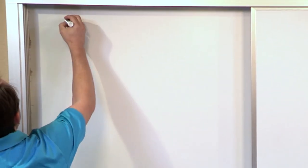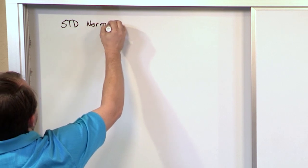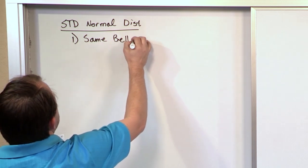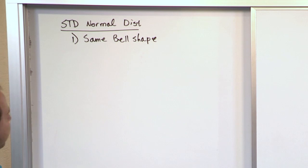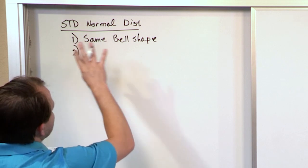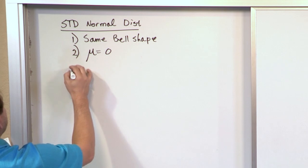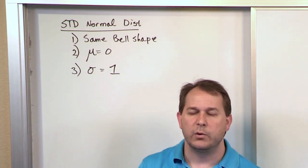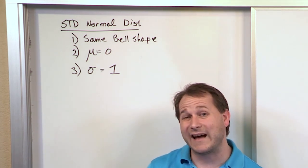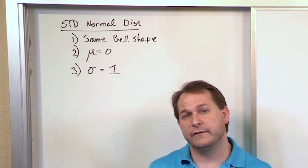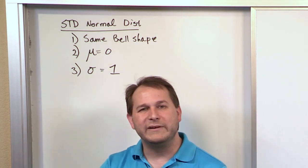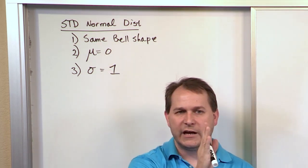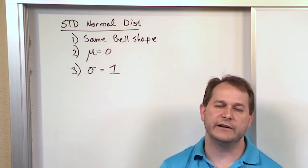So what is the standard normal distribution? It has the same bell shape as all the other normal distributions. For the standard normal, we normalize it so the mean is equal to zero, and the standard deviation is equal to one. Whether you're talking about watermelons, diameters of stars, or home prices, all those means and standard deviations will be different. The standard benchmark we use has the mean at zero — meaning the curve is centered about zero — and the standard deviation changed to one.